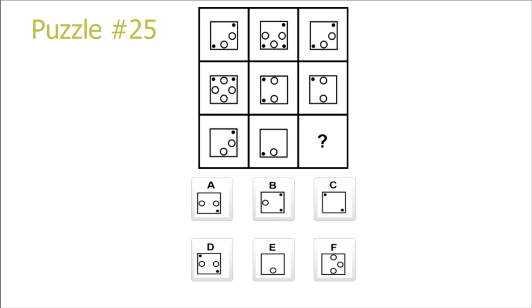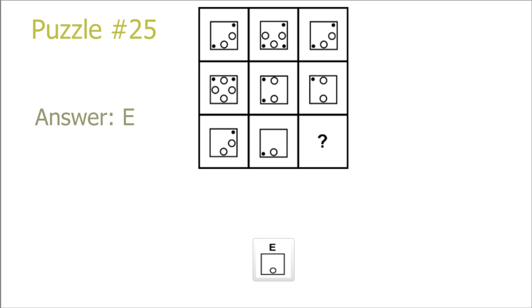Puzzle 25. This is a new unique puzzle. We see that the overlaps between row 1 and row 2 is row 3, or that the overlaps of column 1 and column 2 is column 3. So we can either base ourselves on picture 3 and picture 6 and see what they have in common, or picture 7 and picture 8 and see what they have in common, and they both lead to our solution E.